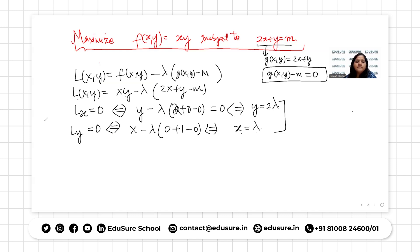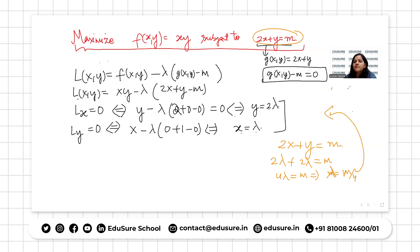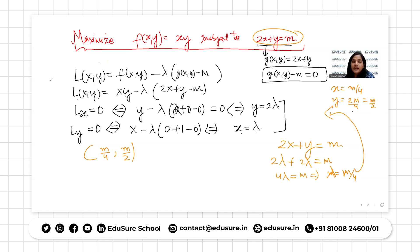Using the constraint 2x plus y equals m: substituting x equals lambda and y equals 2 lambda gives 2 lambda plus 2 lambda equals m, so 4 lambda equals m, meaning lambda equals m over 4. Therefore x equals m over 4 and y equals 2 times (m over 4) equals m over 2. The optimal value occurs at (m/4, m/2). This is how we apply the Lagrange multiplier method to find the maxima or minima of a function of two variables with respect to an equality constraint.